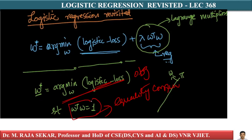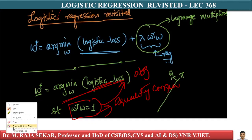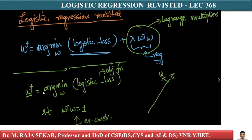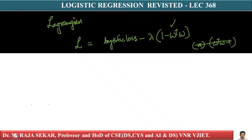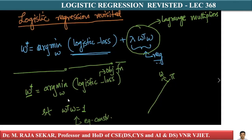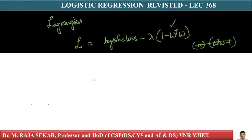Using Lagrange multipliers, I can take this w-transpose-w into the objective function. How can I convert this constraint optimization problem? Let me write the Lagrangian. What is my Lagrangian L? The objective function is the logistic loss, and the constraint is w-transpose-w equals one.